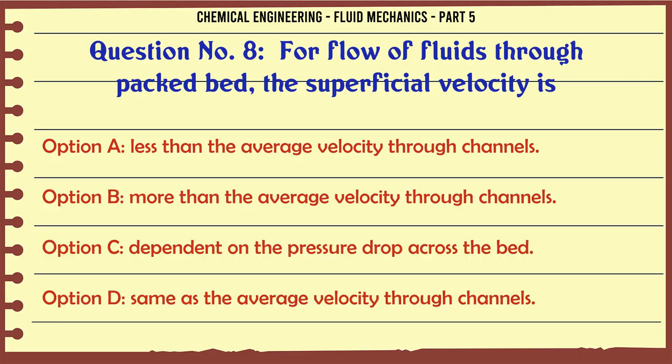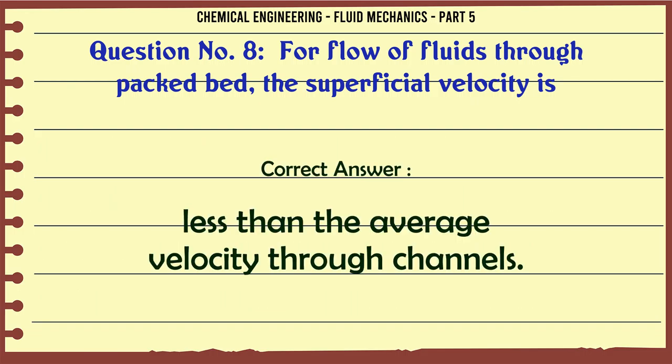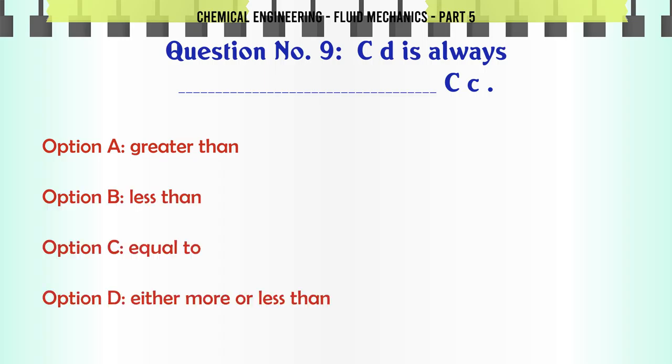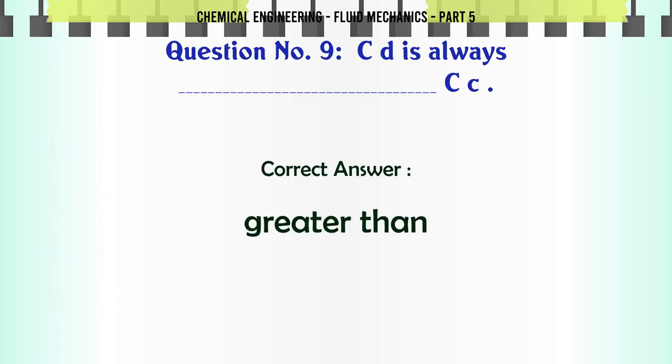For flow of fluids through packed bed, the superficial velocity is: a) less than the average velocity through channels, b) more than the average velocity through channels, c) dependent on the pressure drop across the bed, d) same as the average velocity through channels. The correct answer is less than the average velocity through channels.